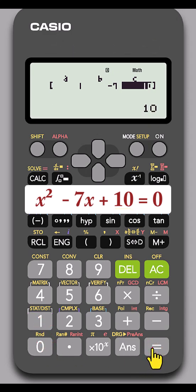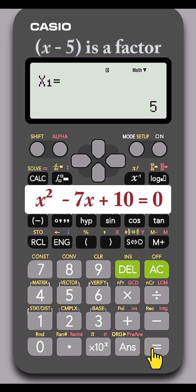Press equals. It shows x1 equals 5, telling us x minus 5 is a factor.